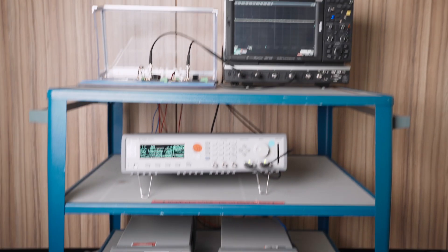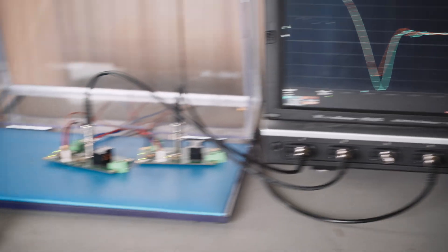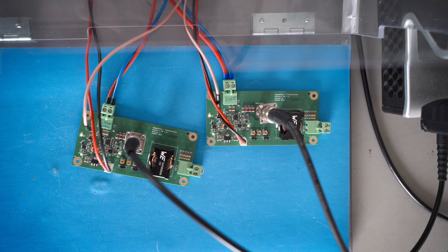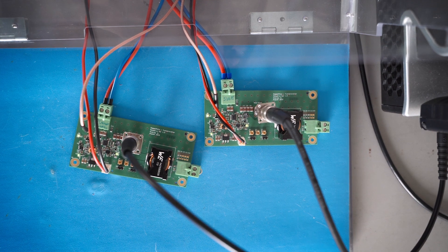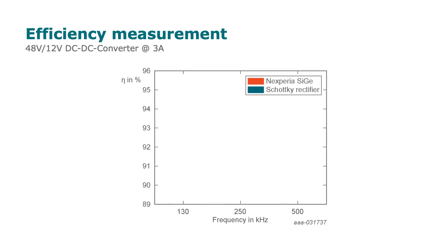Now let's have a look how these benefits will affect the efficiency of a 48 to 12 volt DC-DC converter. Both rectifiers are operating as freewheeling diodes. The benchmark is performed with three different switching frequencies. With increasing switching frequency the efficiency decreases.